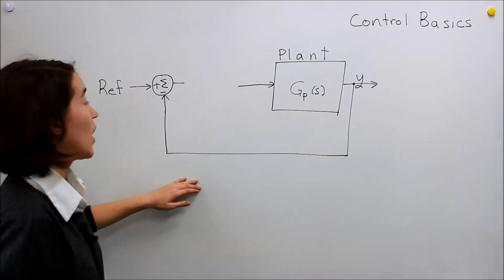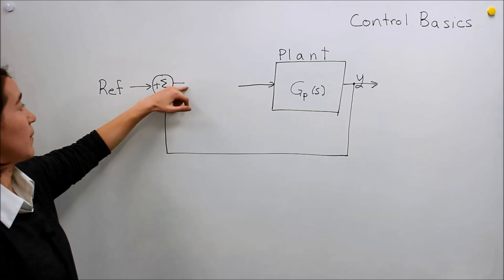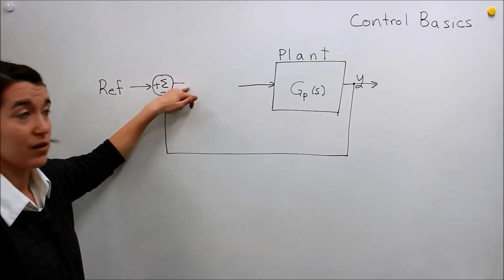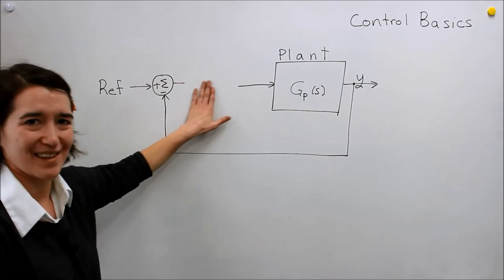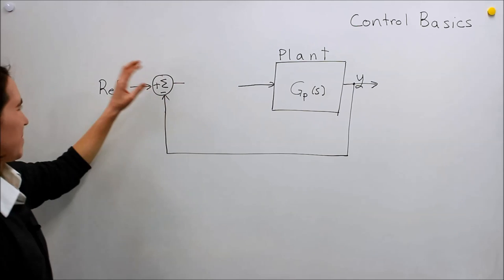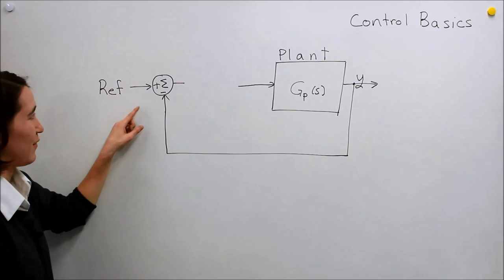If it is too low, this number, this value coming out here will be positive, right? So then that will feed back into our system here. I haven't connected, finished it yet.